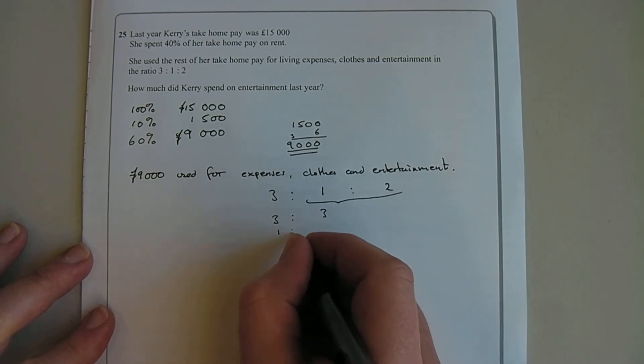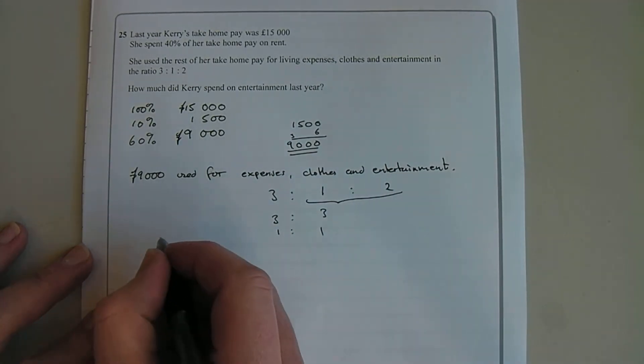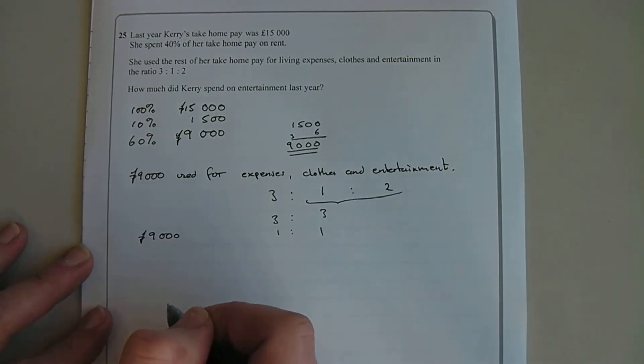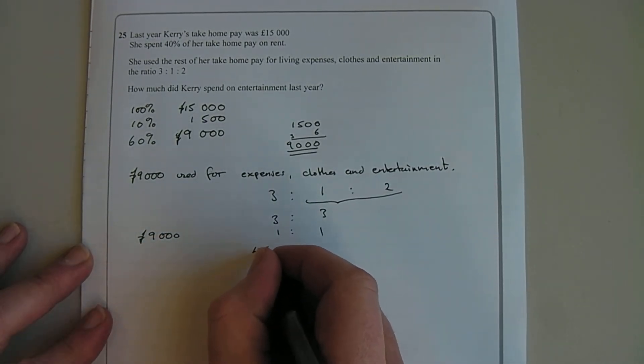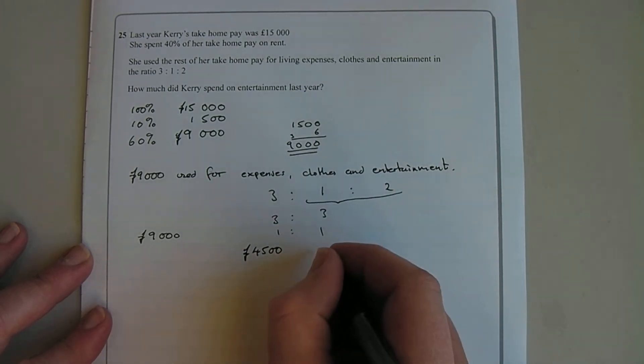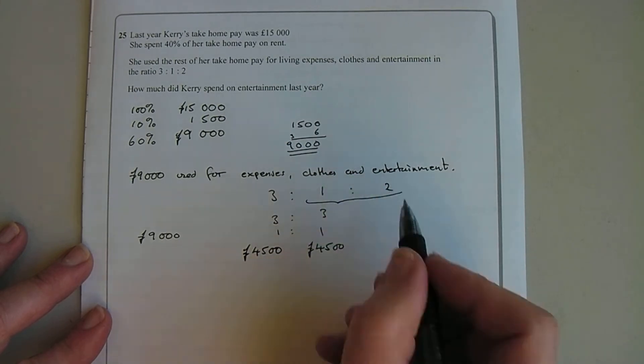Because 3 to 3 is the same as the ratio is 1 to 1. So I know that £9,000 is the total and I can spend £4,500 on expenses and I can spend £4,500 on clothes and entertainment.